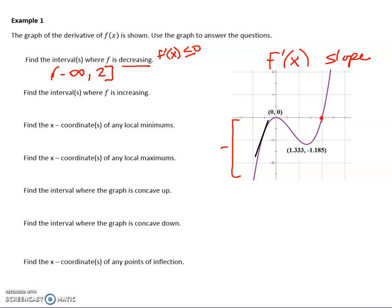When is it increasing? Whenever the slope is positive. So that would be from 2 forward. I know this seems like it's competing, but it's not — we're just looking at those intervals one at a time.